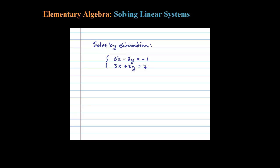Here we're asked to solve this linear system by elimination, and I'm going to try to eliminate the Y's because they're already opposite in sign. If I multiply the top equation by 2, I'll get a 6, and if I multiply the bottom equation by 3, I'll get a 6.